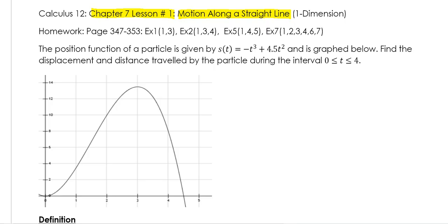Let's jump into a review problem. Back in chapter five we looked at physics application word problems. When dealing with a position function, we use the letter s, s of t. We have a position function of a particle given by s(t) = -t³ + 4.5t², and its graph is shown. The y-axis is s(t) for position and the x-axis is time, showing the position of the particle at any given time.